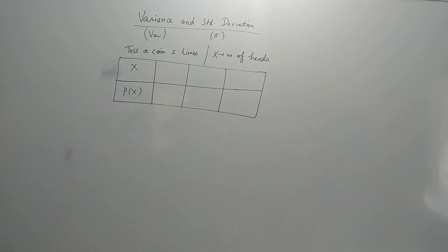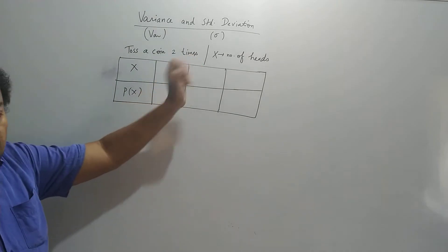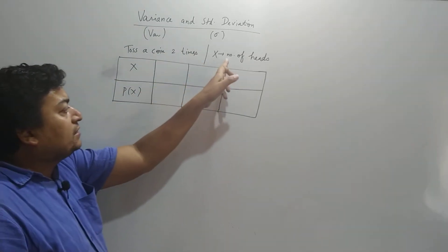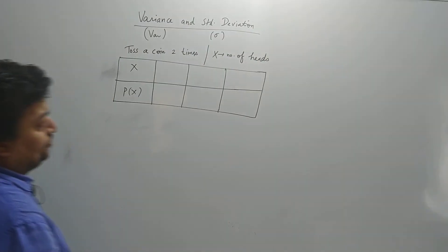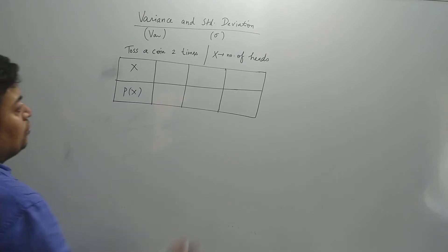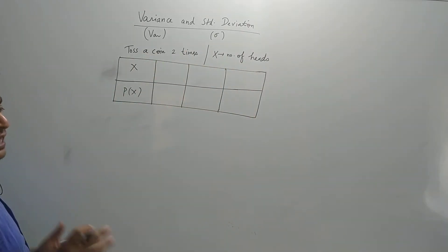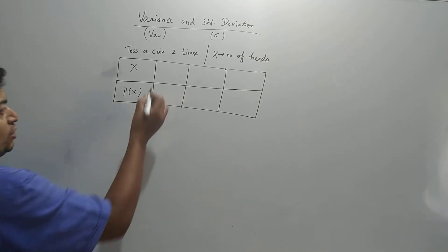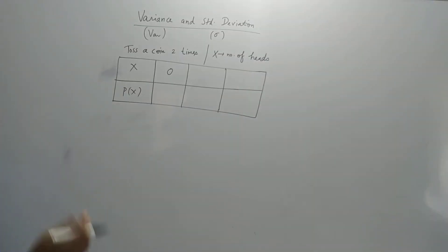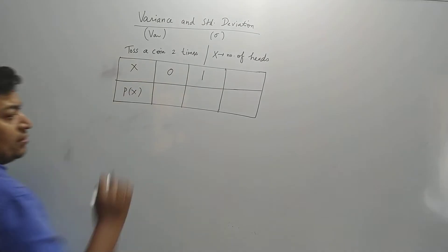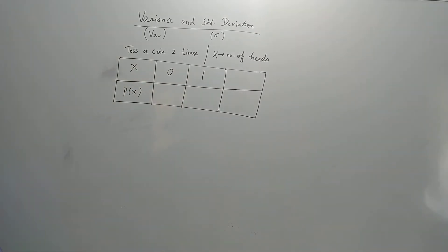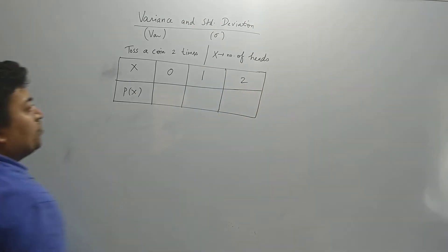I have taken an example of tossing a coin 2 times, where the random variable is the number of heads. The number of heads can be 0, 1, or 2. You can get 0 heads — meaning tails both times. X can be 1 if one toss is head and the other is tail, or vice versa. X can be 2 if both tosses give heads.